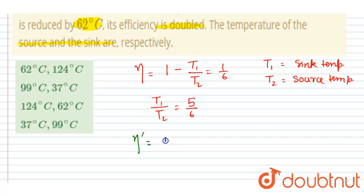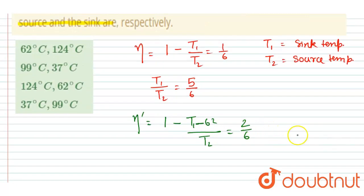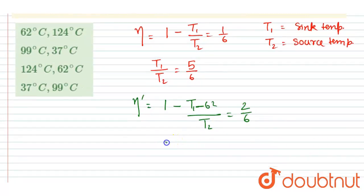equals to 1 minus (T₁ - 62)/T₂, which equals (T₁ - 62) divided by T₂ equals 6/6 minus 2/6, so it will be 4/6.